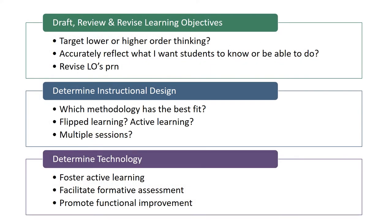We can use an iterative process: first, we're going to draft or revise learning objectives, then determine the instructional design, and then determine the technology with the best fit to carry out that design. With drafting or revising learning objectives, we want to make sure they accurately reflect what we want students to know or be able to do, and identify the target cognition — is it lower or higher order thinking? Higher order thinking tends to be associated with active learning. On the instructional design side, we figure out which instructional methods will be most suitable to helping students achieve those objectives. In determining the technology with the best fit: does it foster active learning, does it facilitate participation and formative assessment, and overall is it more efficient and effective than not using it?